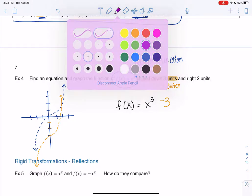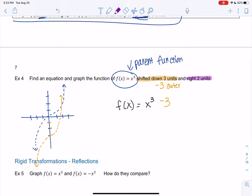And then we want to go to the right, 2 units. So that would be an inner move because it's inside. And then inner is the opposite, so it's actually minus 2. So we're going to inner, go to the right, 1, 2. So we're going to start here. And that's our function.